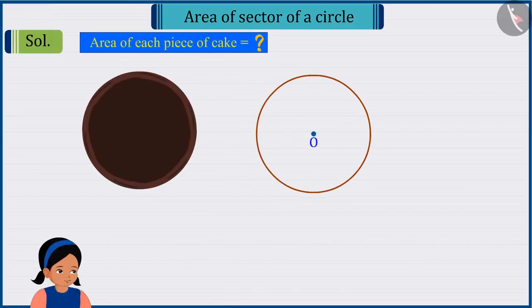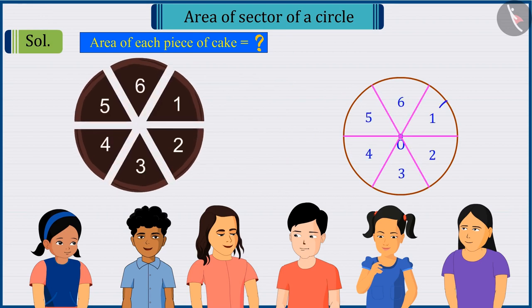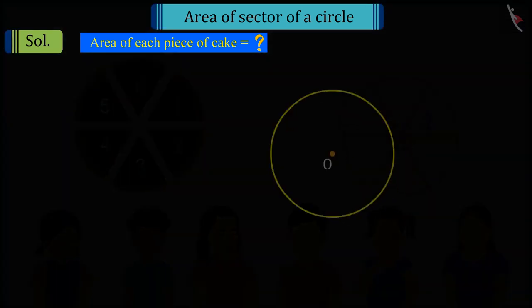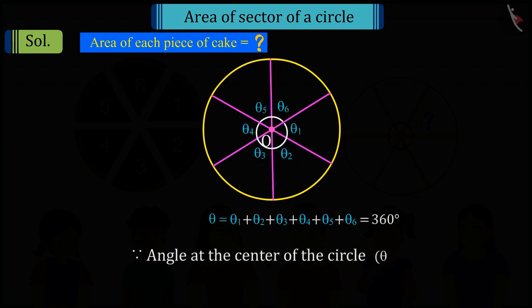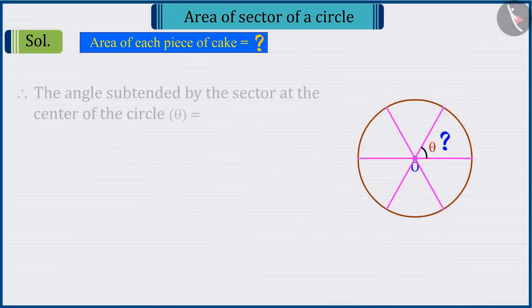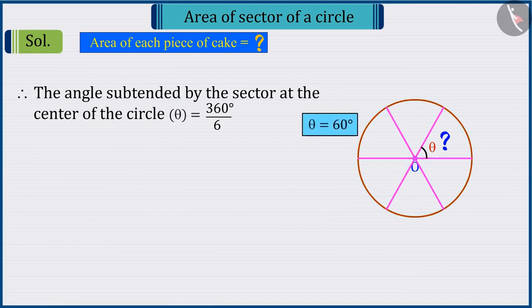Since according to the question, the cake has to be divided among six friends, so we can say that there will be total six parts of the cake, that is, six sectors will be formed, which we can demonstrate like this. Can you tell, what will be the angle subtended by these sectors at the center? Absolutely correct, because we know that the sum of the total angles at the center of a circle is 360 degrees, and we are dividing the cake into six sectors, so the angle subtended by each sector at the center would be 60 degrees.